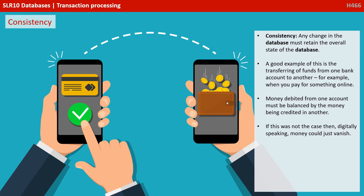Consistency. A change in the database must retain the overall state of the database. A good example of this is the transferring of funds from one bank account to another. For example, when you pay for something online, money debited from one account must be balanced by the money being credited in another. If this was not the case, digitally speaking, money could literally vanish — and clearly we can't have this.